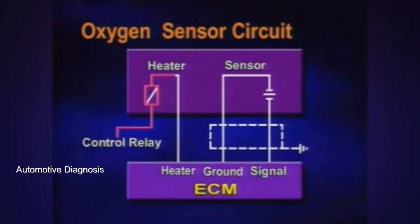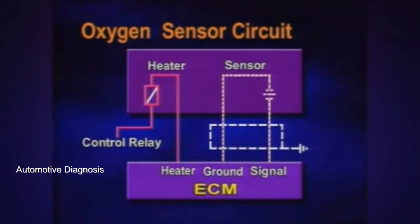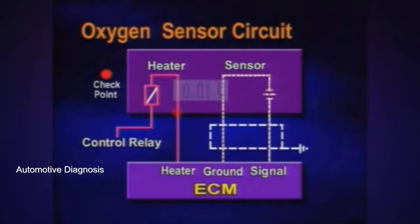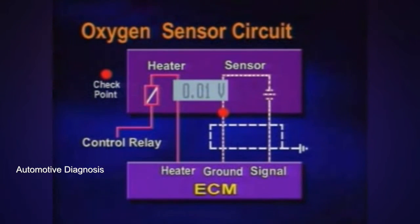The sensor has four terminals. Two of them are for sensor heaters and the others are for the sensors. The heater power is 12 volts from the control relay and the other wire is controlled by the ECM. The two terminals for the sensors consist of a signal wire and ground.